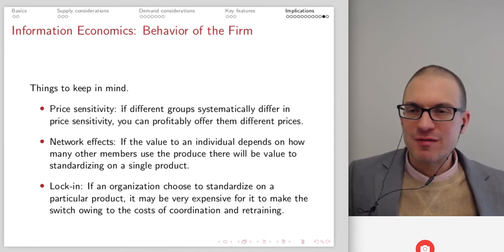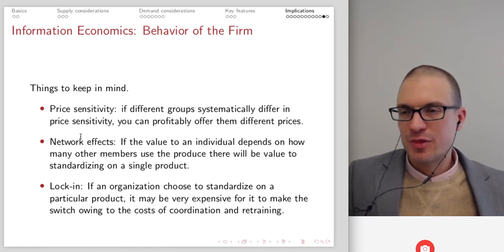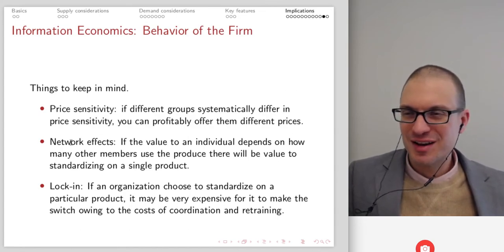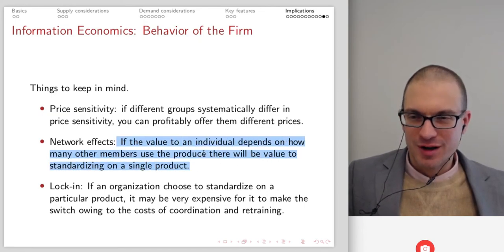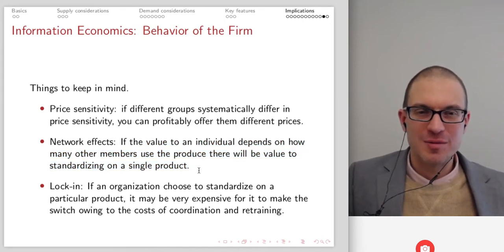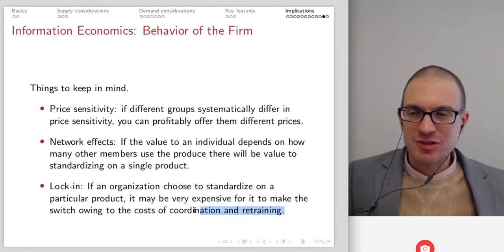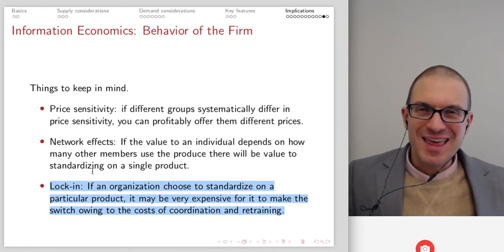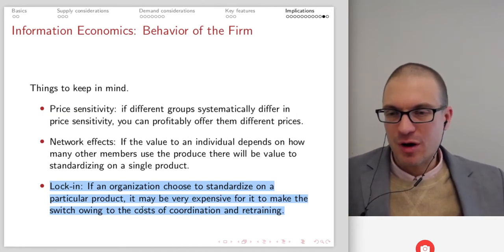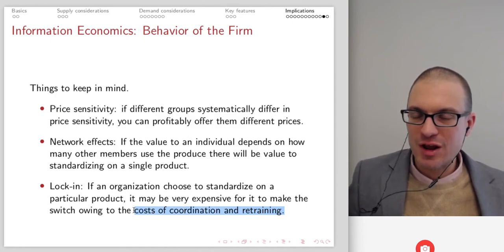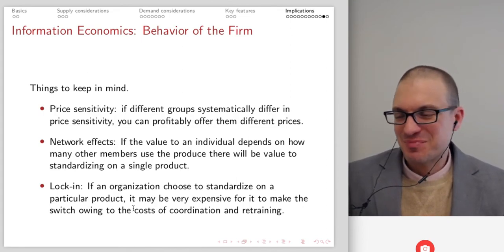Group pricing: set different prices for different groups of consumers, as in student discounts — that's third degree price discrimination. You can offer upgrades and enhancements, target new and existing customers differently, especially if there's some type of switching costs or lock-in involved. Things to keep in mind: price sensitivity — if different groups systematically differ in price sensitivity, you can profitably offer them different prices. Network effects: if the value to the individual depends on how many others use the product, there'll be value to standardizing on a single product to get that network as large as possible. Lock-in: if an organization standardizes on a particular product, it might be very expensive to switch owing to coordination and retraining costs.